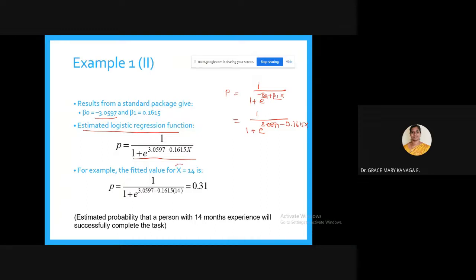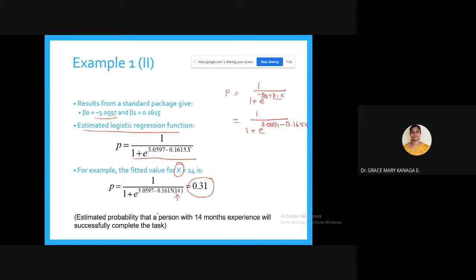The estimated probability that a person with 14 months of experience will successfully complete the task is 0.31 — relatively low probability. The probability of success increases sharply with experience.